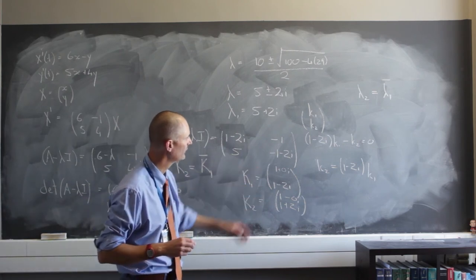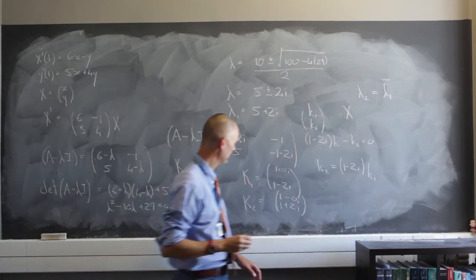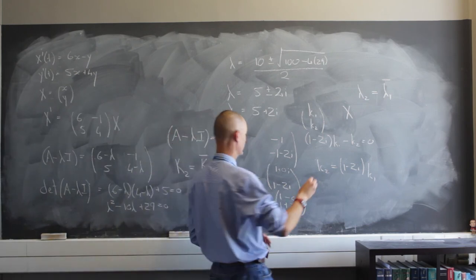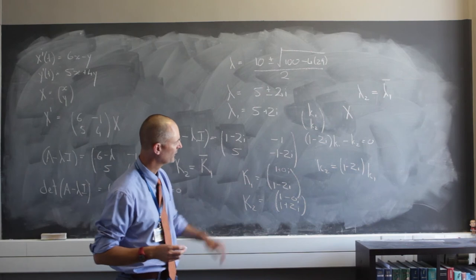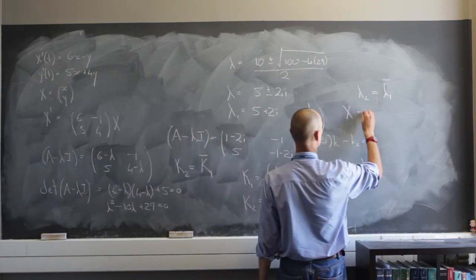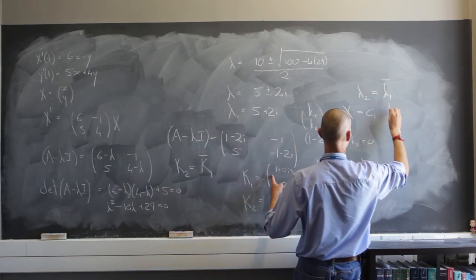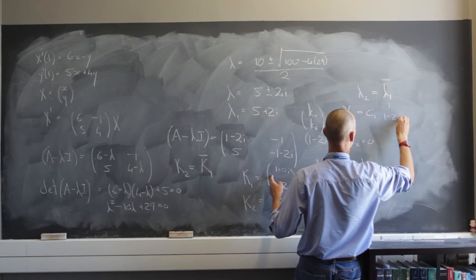So you have these two values, and you'll note that they are not constant multiples of each other. This one you'll use for x sub 1, this one you'll use for x sub 2. So it's going to be c sub 1, and then x sub 1 is just going to be this: 1 and 1 minus 2i.